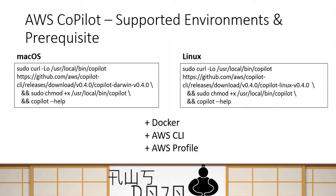At the time of creating this video, Copilot is supported on Mac OS and Linux environments. That means the machine you are running this command on has to be either a Linux or Mac OS machine. The way you download it is that you download it from the repository, and then you simply give execute permission to the Copilot application. The installation method is the same for both platforms — only the repository locations are different.